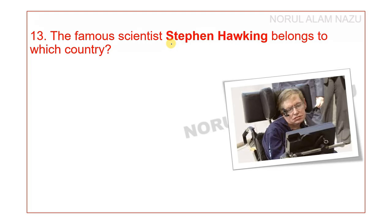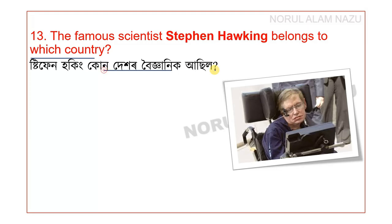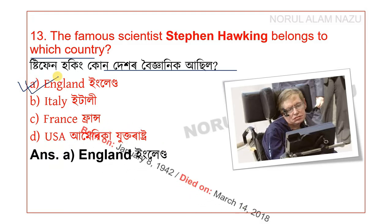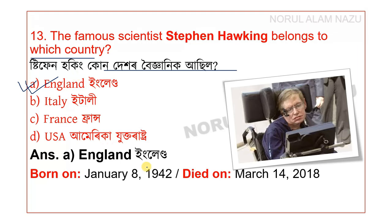Question number 14: The famous scientist Stephen Hawking belongs to which country? Options are England, Italy, France, and America. The answer is England. He was born on 8 January and passed away on 14 March 2018.